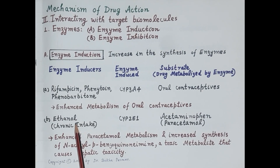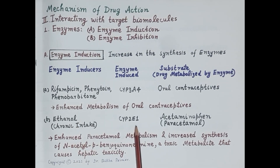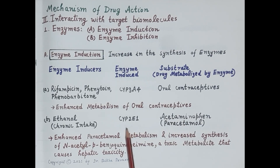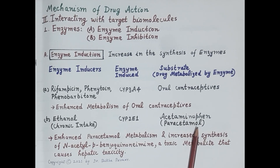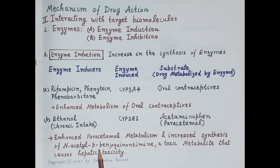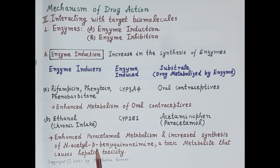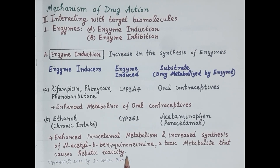Another example of enzyme induction is ethanol. Chronic intake of ethanol induces increased synthesis of cytochrome P2E1. Cytochrome P2E1 metabolizes acetaminophen, also called paracetamol. So increased synthesis of cytochrome P2E1 enhances metabolism of paracetamol, resulting in increased accumulation of N-acetyl-para-benzoquinoneimine — a toxic metabolite of paracetamol — which causes hepatic toxicity.